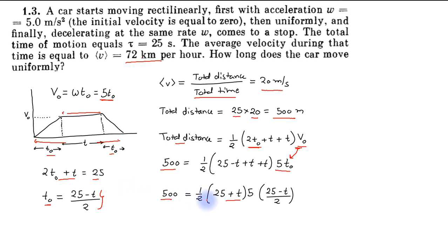Further simplifying, we will have 400 equals 625 minus t squared. Solving this equation, we will get t equals 15 seconds.